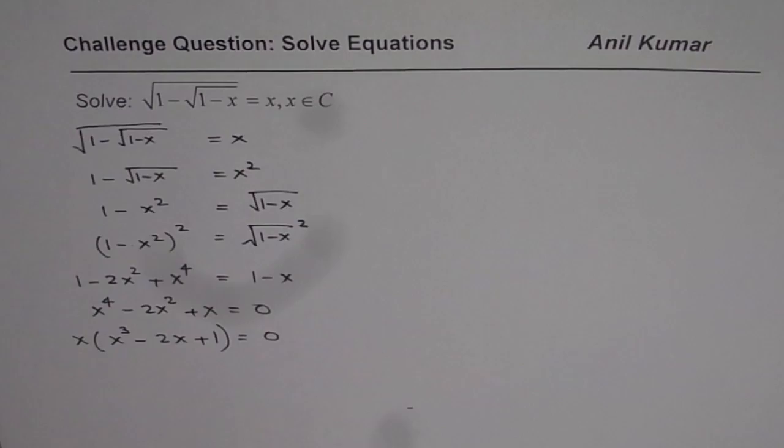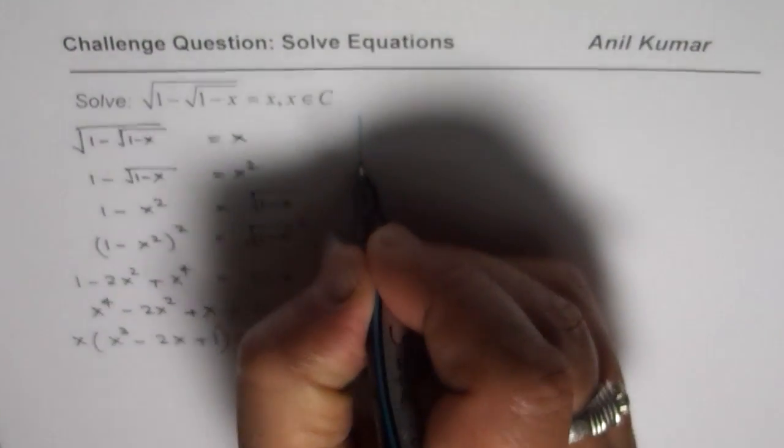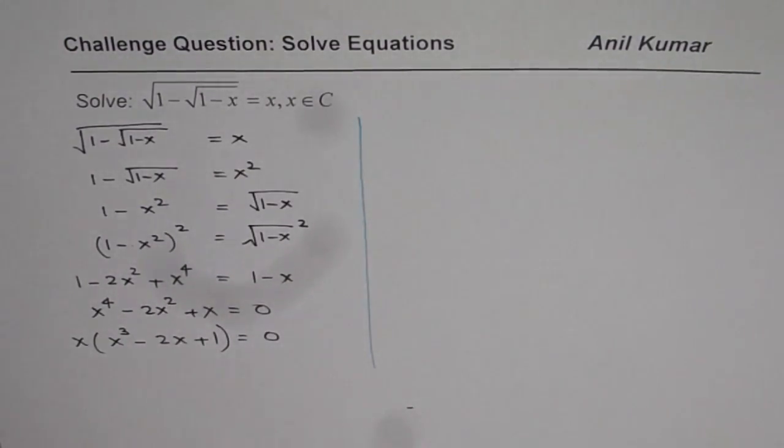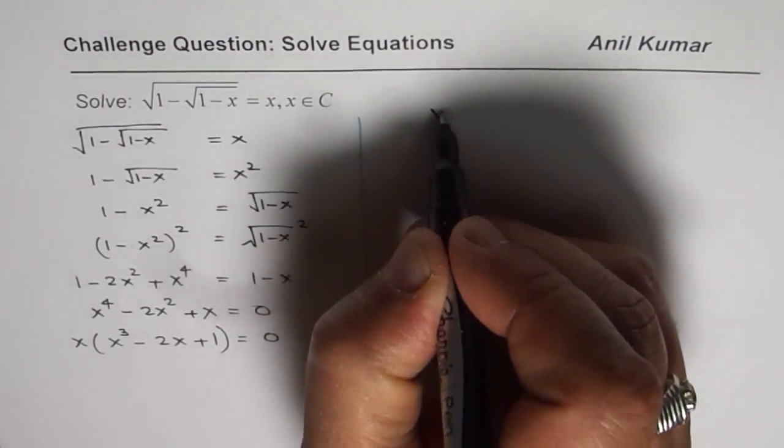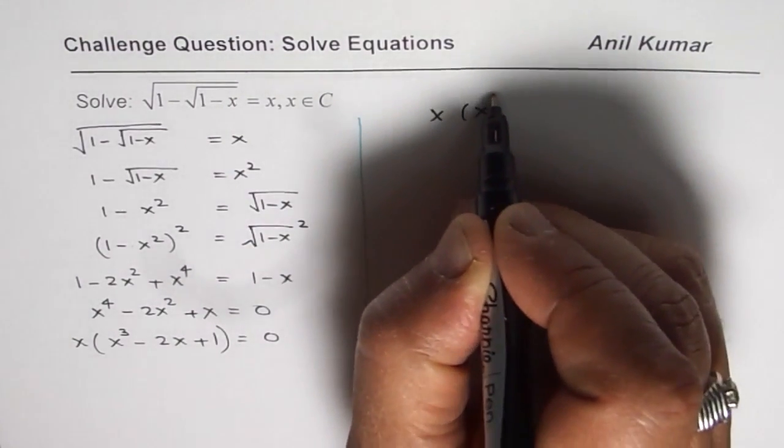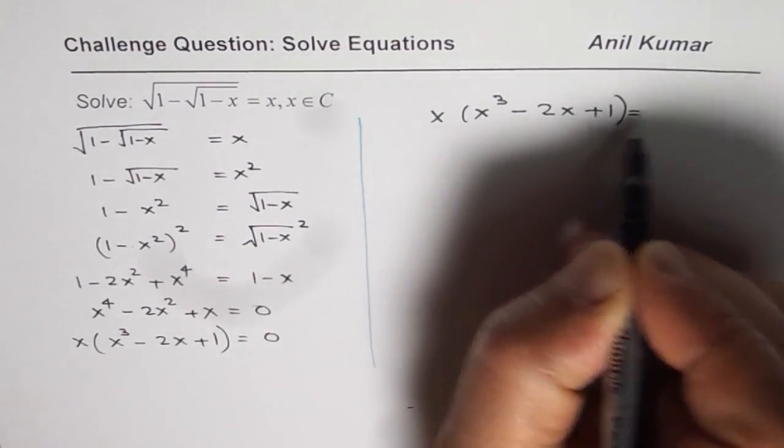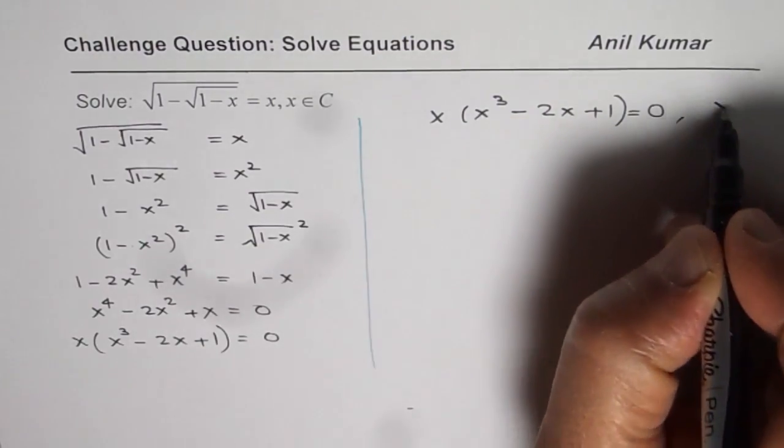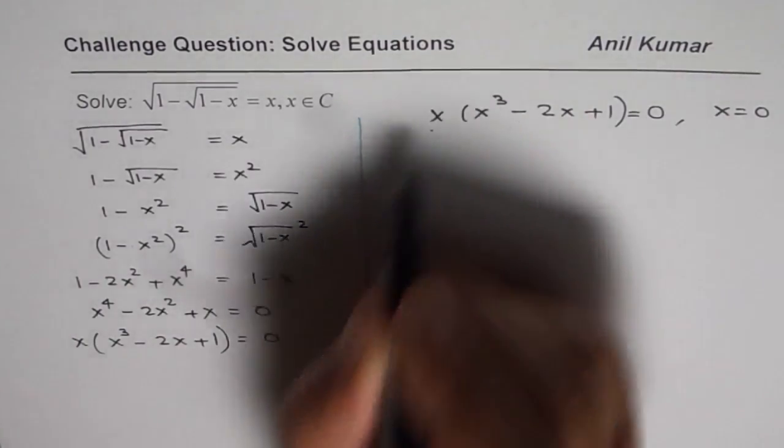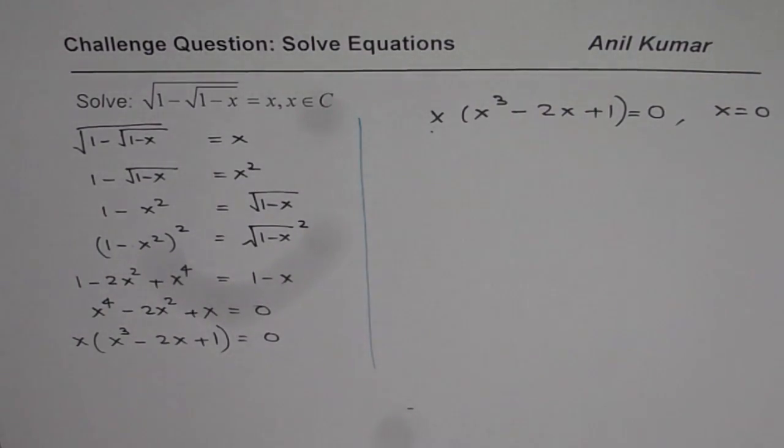Now let us try to find other solutions also. So the equation which we have now is x times x cube minus 2x plus 1 equals 0. That means x equals 0. That is indeed one solution which we can get from the given factor.